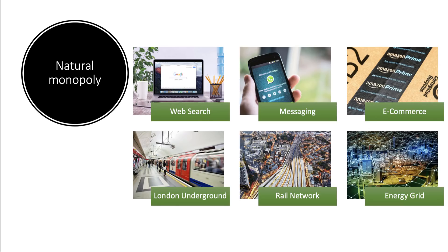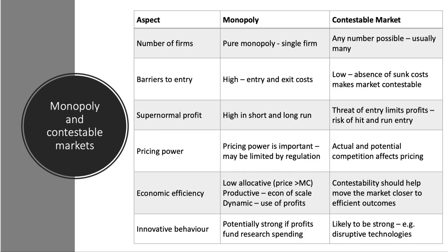Natural monopoly is a separate topic covered on the Tutor2u website, where big scale economies — such as the London Underground, network industries, energy grids, messaging, or web search — make the natural monopoly defense relevant. This slide compares a pure monopoly with a contestable market, looking at the number of firms, the nature of barriers to entry, and crucially the extent to which each market structure achieves allocative, productive, and dynamic efficiency. Make use of all three types of efficiency in your exams.